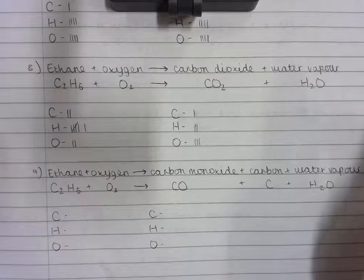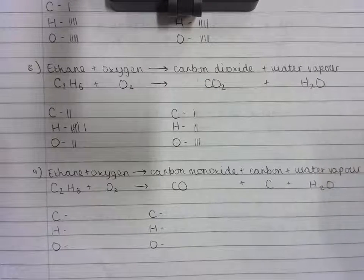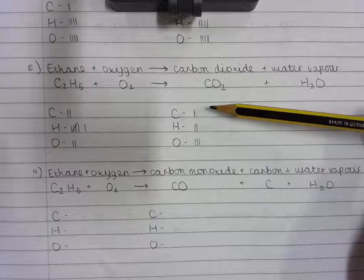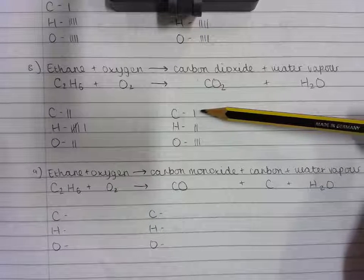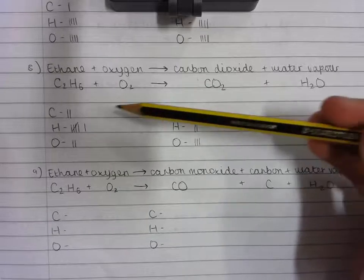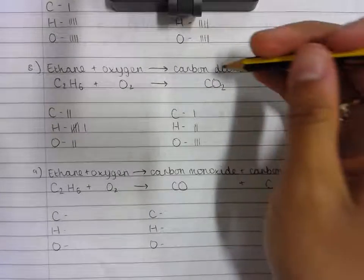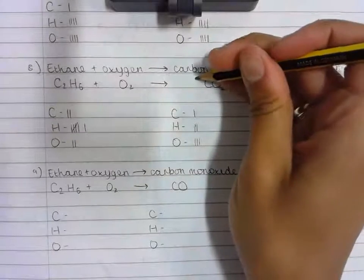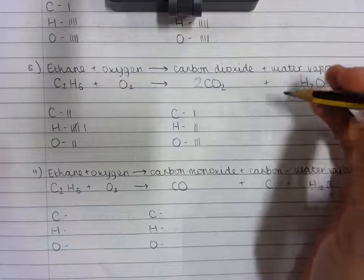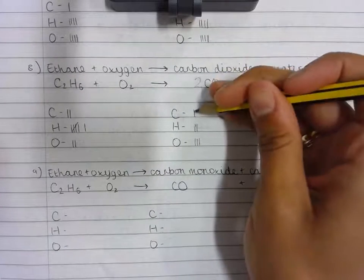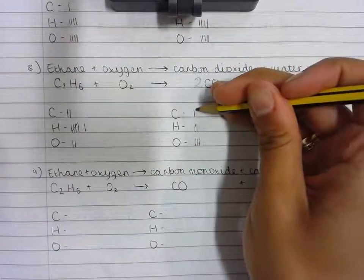Now I need to put my black pen down and ask the question: is it balanced? And the answer is no. I need to increase the number of carbon atoms by one — I need two in total — so I'll put a two in front of the carbon dioxide molecule and retally: one, two carbon atoms.